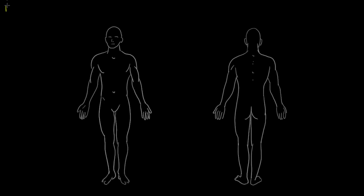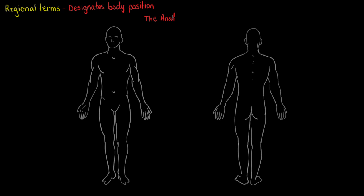Hey guys, we're going to be talking about regional terms today. Regional terms are what we use to describe specific areas of the body correctly, so they're going to be the designated name relating to body position. Like I discussed in the lesson on anatomical planes and directional terms, we assume that the body is in the anatomical position when we give these names. So regional terms designate body position, and that position is the anatomical position, which we use to describe all the different areas.